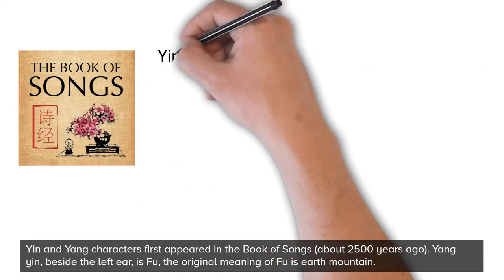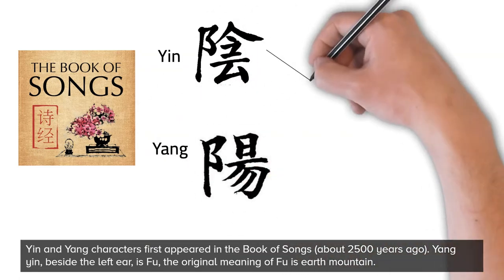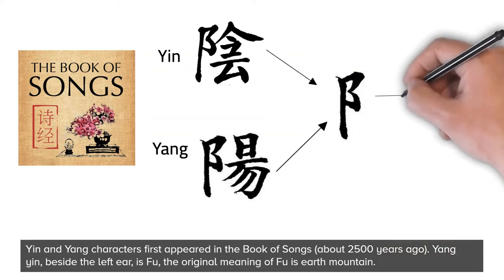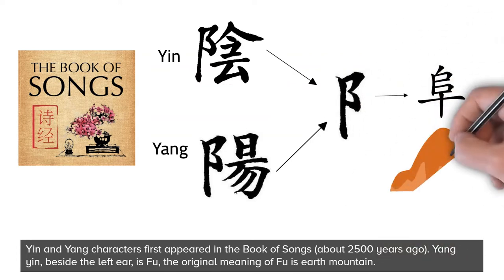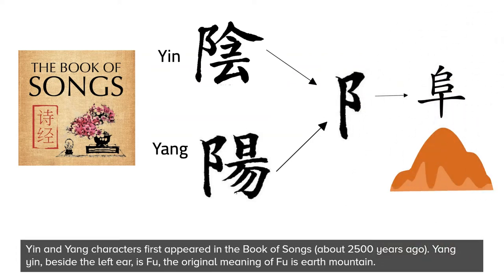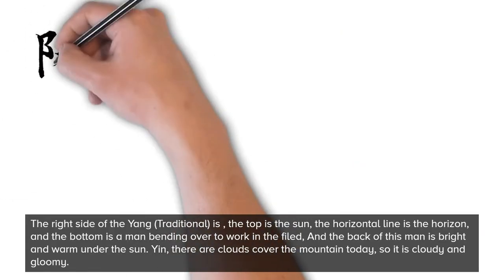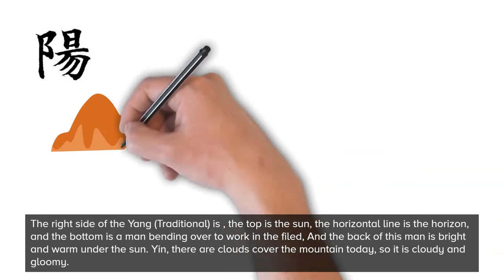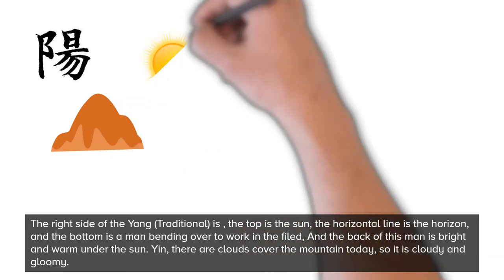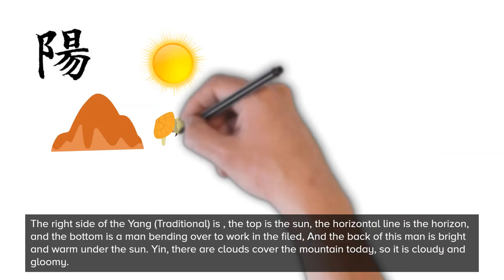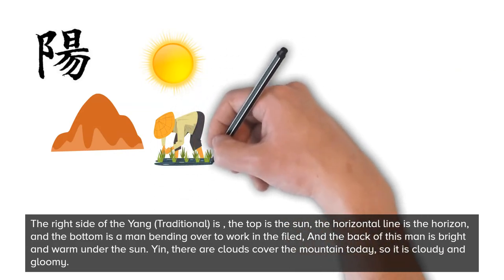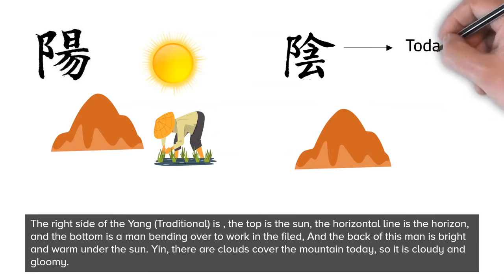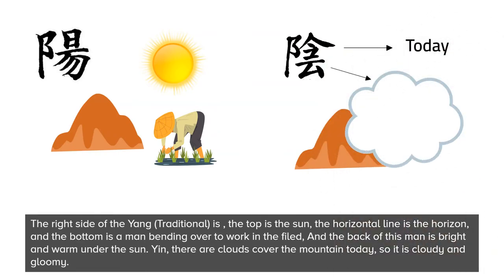The yin and yang characters first appeared in the Book of Songs, about 2,500 years ago. The yang character, beside the left-ear radical, is fu — the original meaning of which is earth mountain. The right side of the traditional yang character has the sun on top, a horizontal line as the horizon, and a man bending over to work in the field at the bottom, whose back is bright and warm under the sun. For yin, there are clouds covering the mountain, so it is cloudy and gloomy.